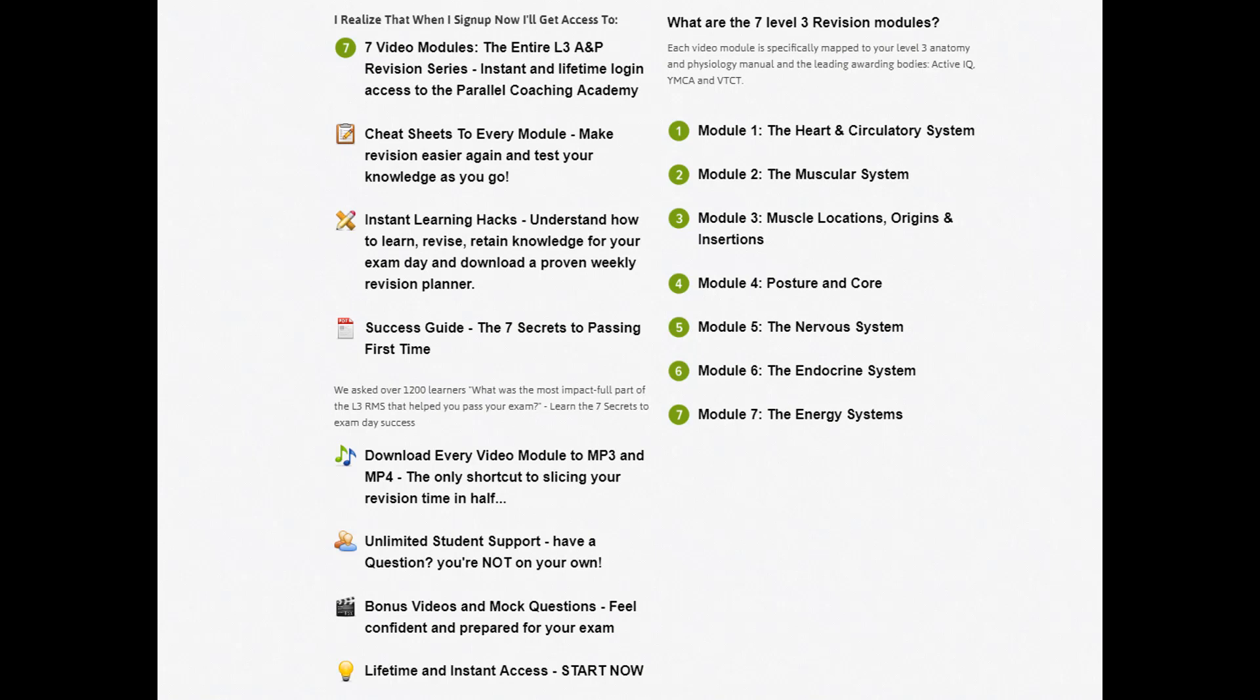Then you have the success guide, our seven secrets to passing first time. This has been really interesting because we asked over 1,200 learners that have worked with us what their most impactful part of the revision mastery series is that's helped them pass their exam. And very strangely, it came down to seven secrets. These seven parts are the areas that learners have said have helped them the most. So you can hop, if you want to save time, you can literally hop straight to the success guide and use their seven secrets to help shortcut your progress throughout the revision mastery series. So you can go straight to the juicy bits, straight to the most important areas.